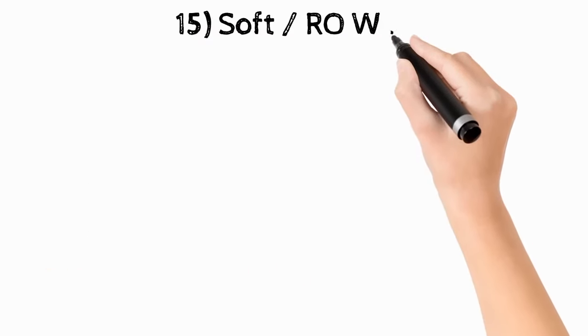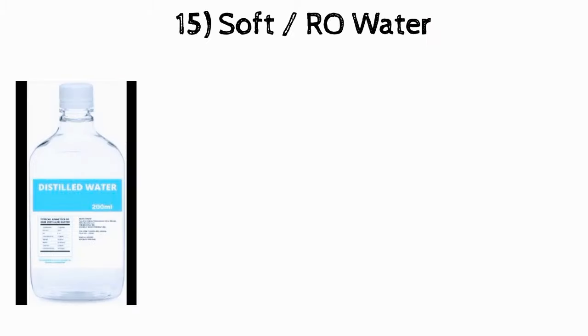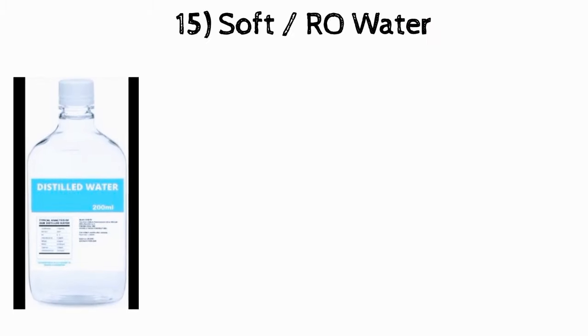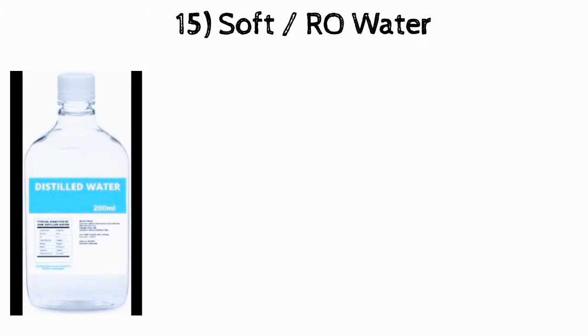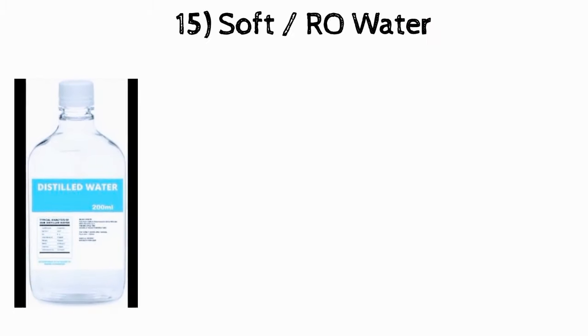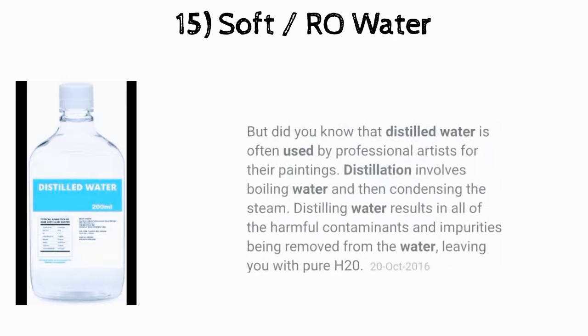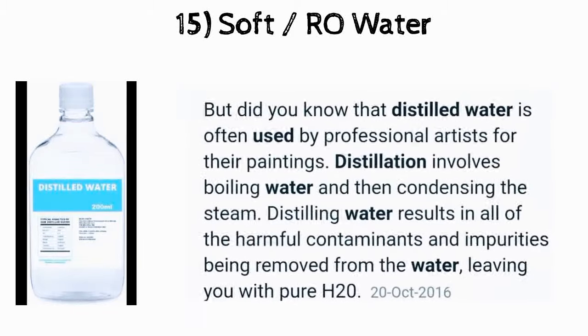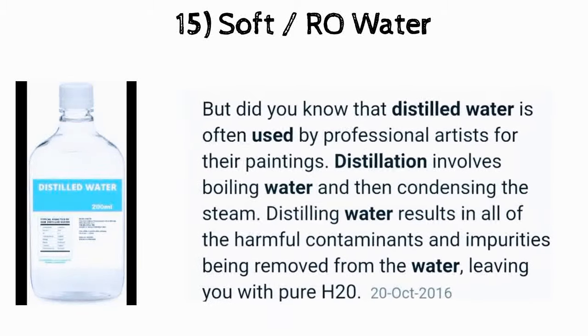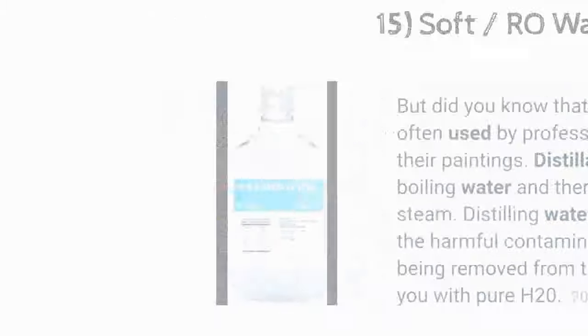The fifteenth raw material you need for making glossy distemper is soft or DMRO water. Never use dirty or salty water to make distemper or any liquid emulsion.